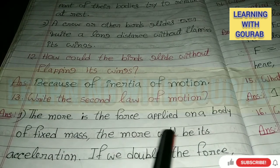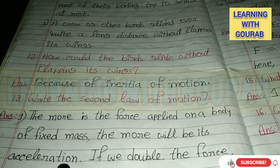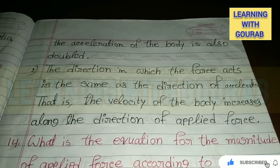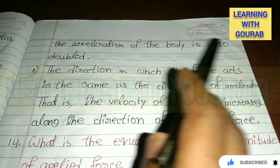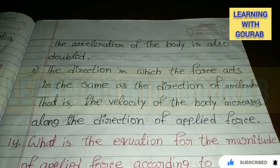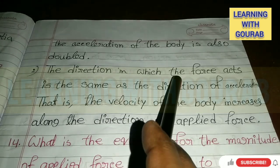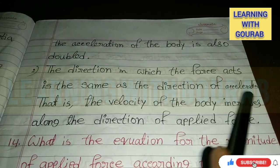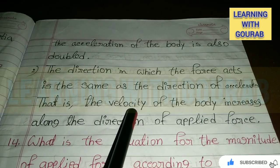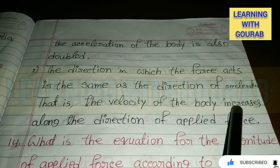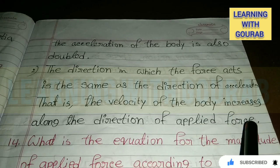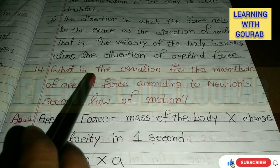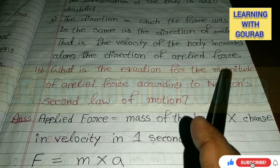The greater the mass, the more will be its acceleration. If we double the force, the acceleration of the body is also doubled, and the direction in which the force acts is the same as the direction of acceleration — that is, the velocity of the body increases along the direction of the applied force.